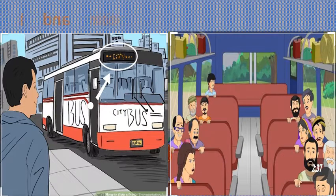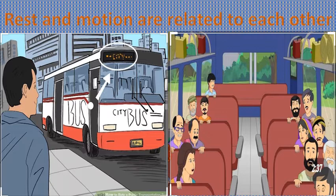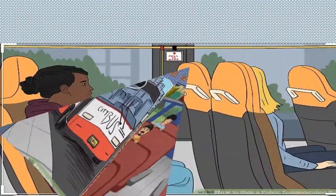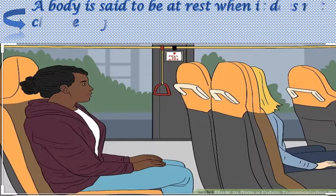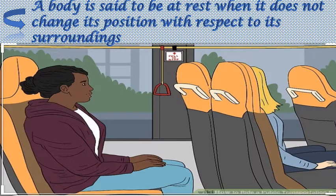So we can say that the same object can be at rest relative to one group of objects while it can be in motion relative to some other group of objects. So we can conclude that the terms rest and motion are relative terms. We cannot say that an object is at rest or in motion until and unless we specify relative to which surroundings we are talking. Now we can say that a body is said to be at rest when the position of the body with respect to its surroundings does not change with space and time.